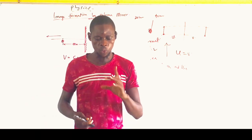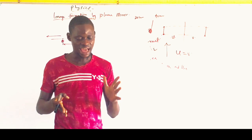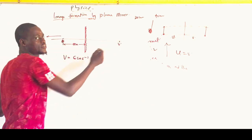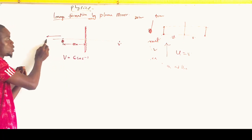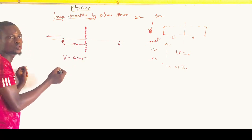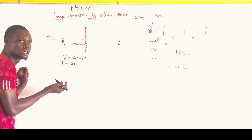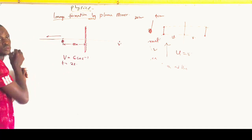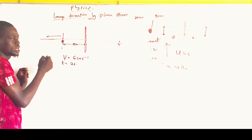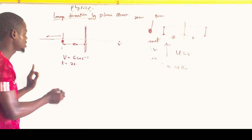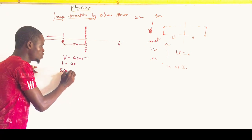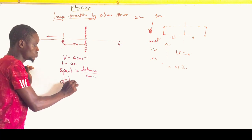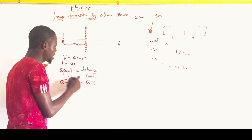The question asks: what will be the distance separating the object and the image after 2 seconds? First, we calculate the distance the object covered within that speed and time — that tells us how far it has moved. Speed equals distance over time taken, so distance covered equals speed multiplied by time, which is 6 multiplied by 2.